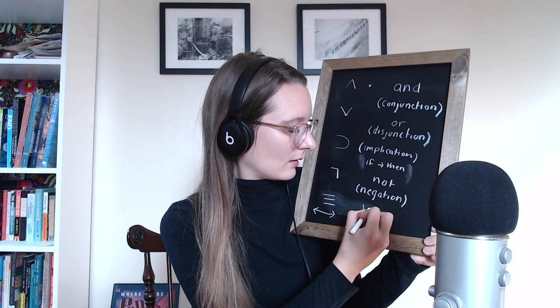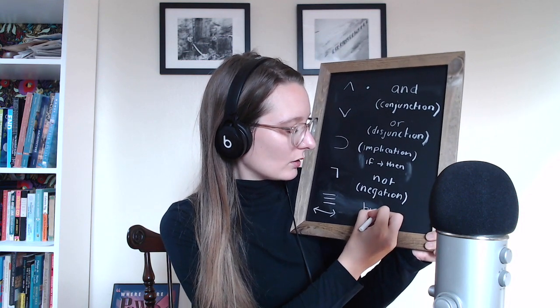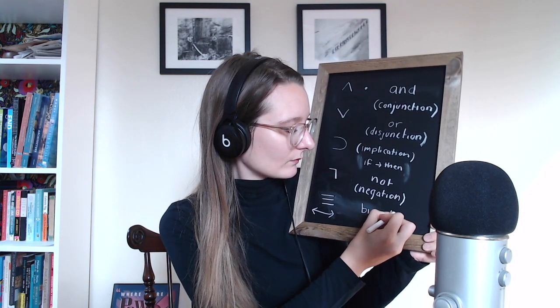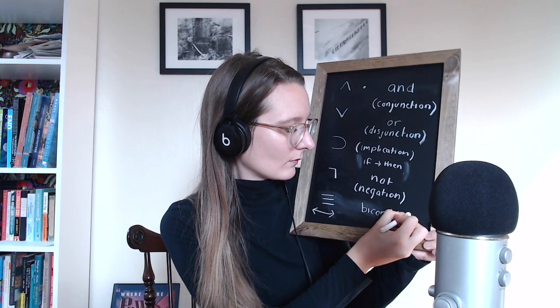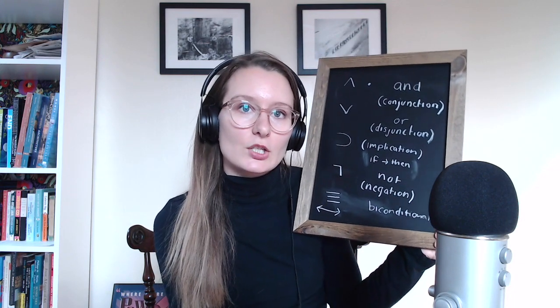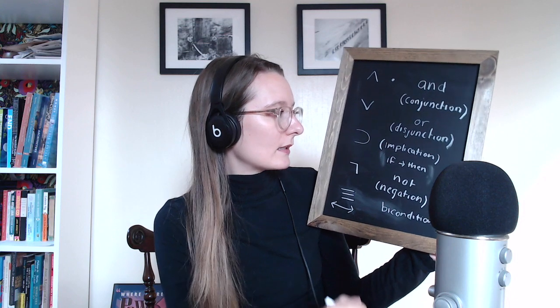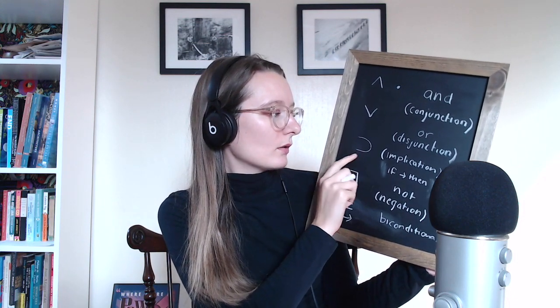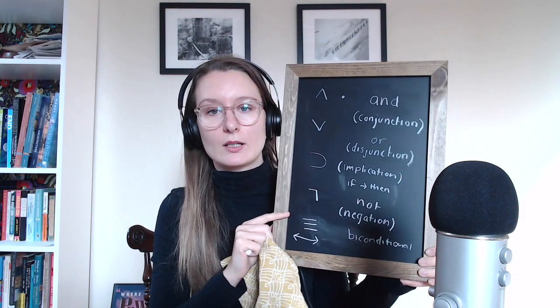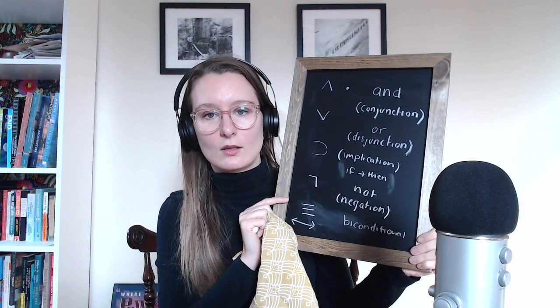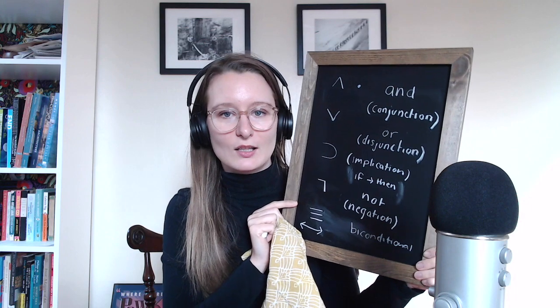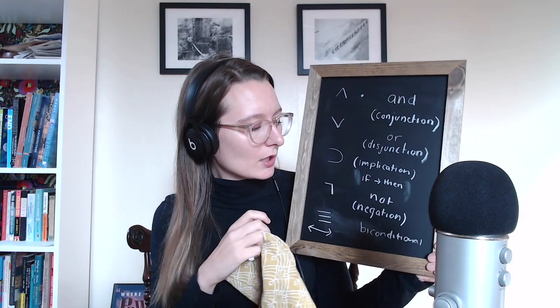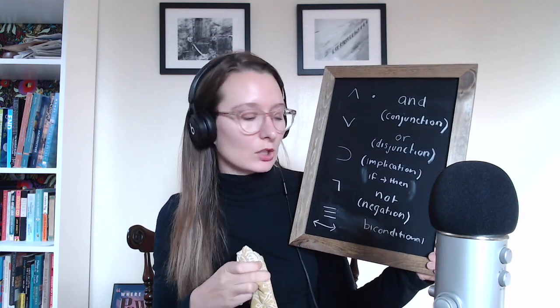What a biconditional does is it says: if two statements, and then their inverse. I'll write that out so it makes more sense. So I'm going to erase the board now, so go ahead and take a look if you still need to, so I can show you what a biconditional looks like. Those are the symbols for a biconditional.